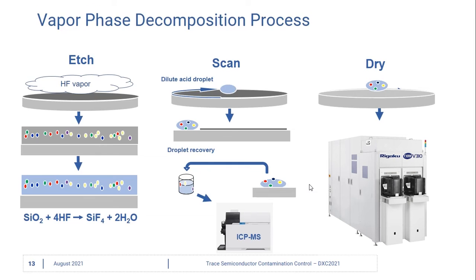The etched wafer surface is now hydrophobic, which allows us to take a dilute acid droplet, scan it across the surface of the wafer, and collect the oxide layer contaminants into one droplet. We can take that droplet and put it in a vial and measure it on ICP-MS, or we can dry it on the wafer and measure it on TXRF. VPD gives us great sensitivity because we concentrate the entire wafer surface into one sample.